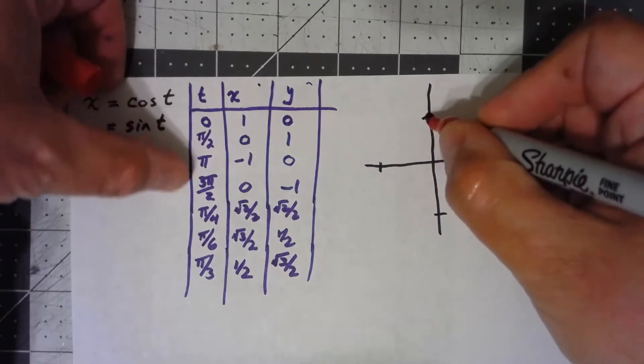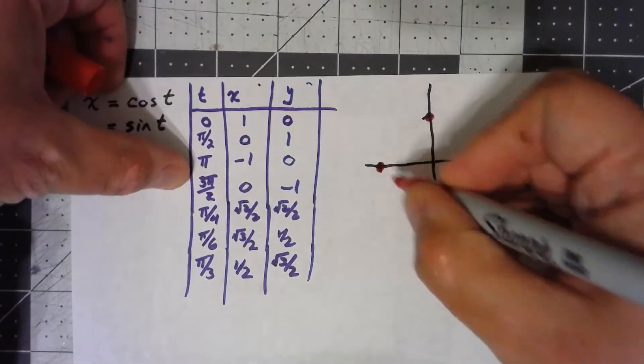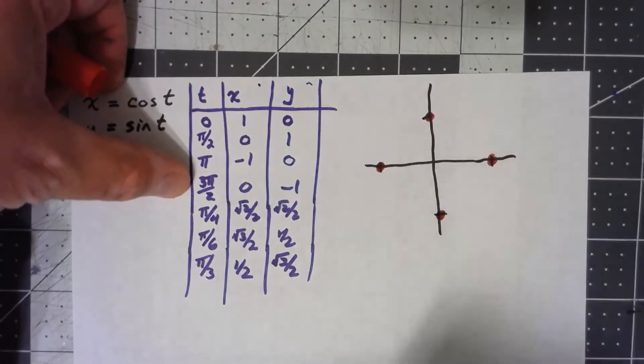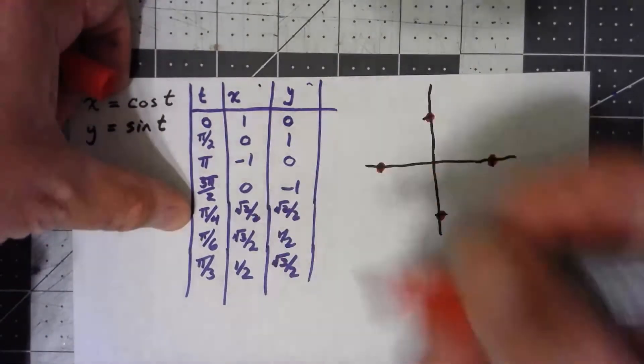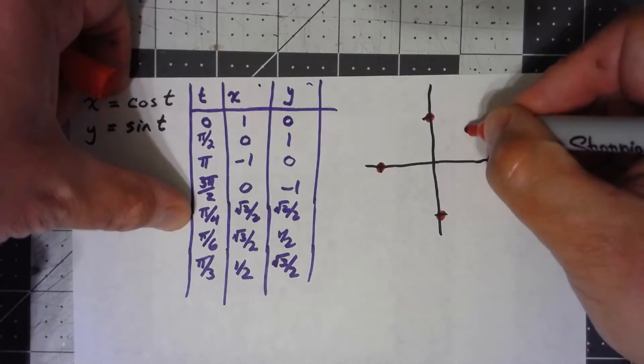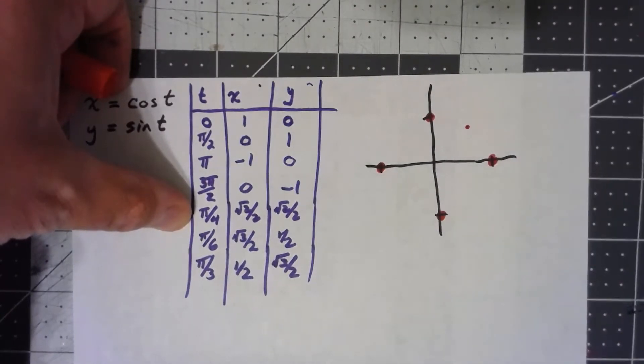At pi, I get negative 1, 0. And at 3 pi over 2, I get 0, negative 1. At pi over 4, I get root 2 over 2, which is about 0.7 for each, so somewhere around right there.